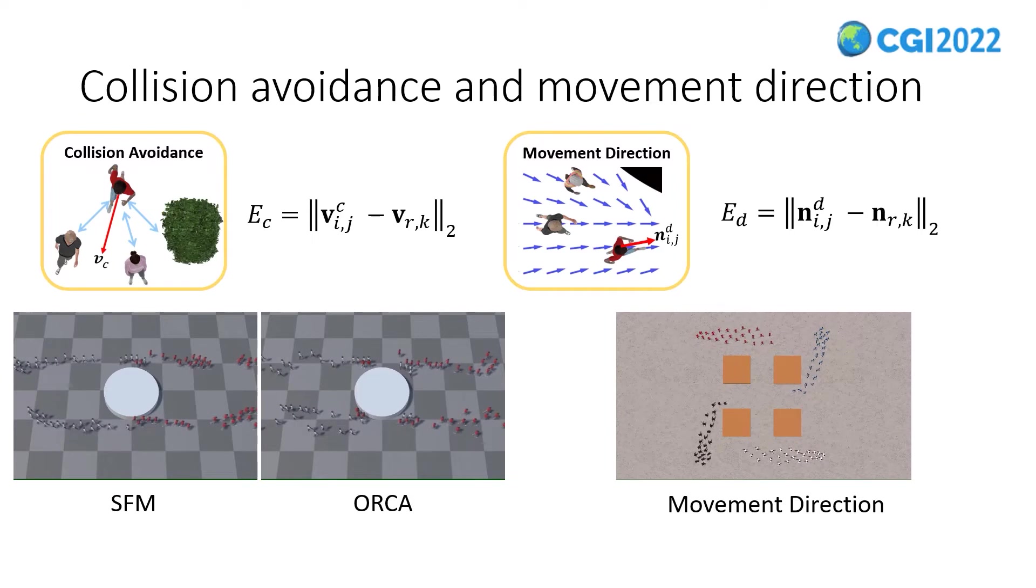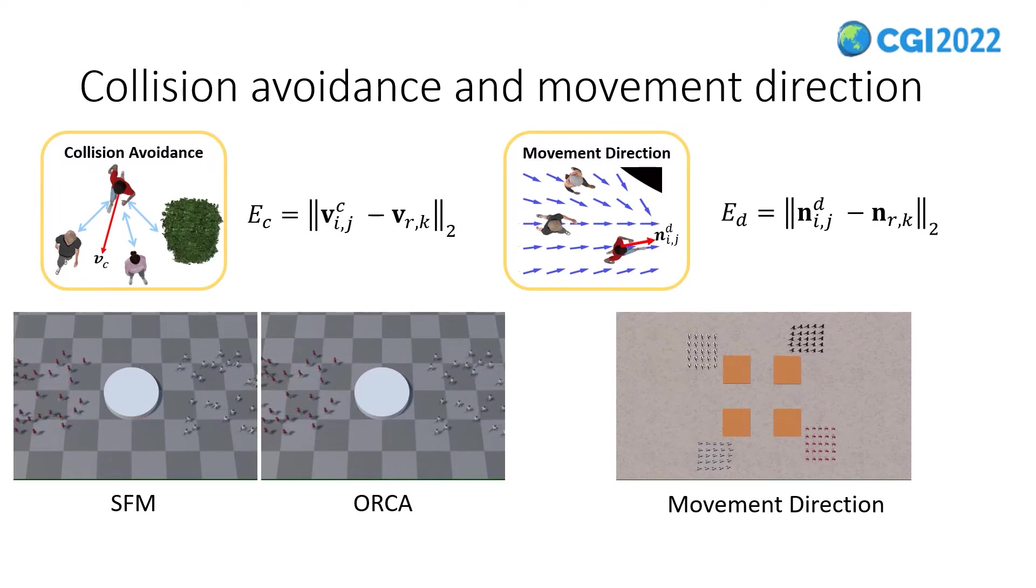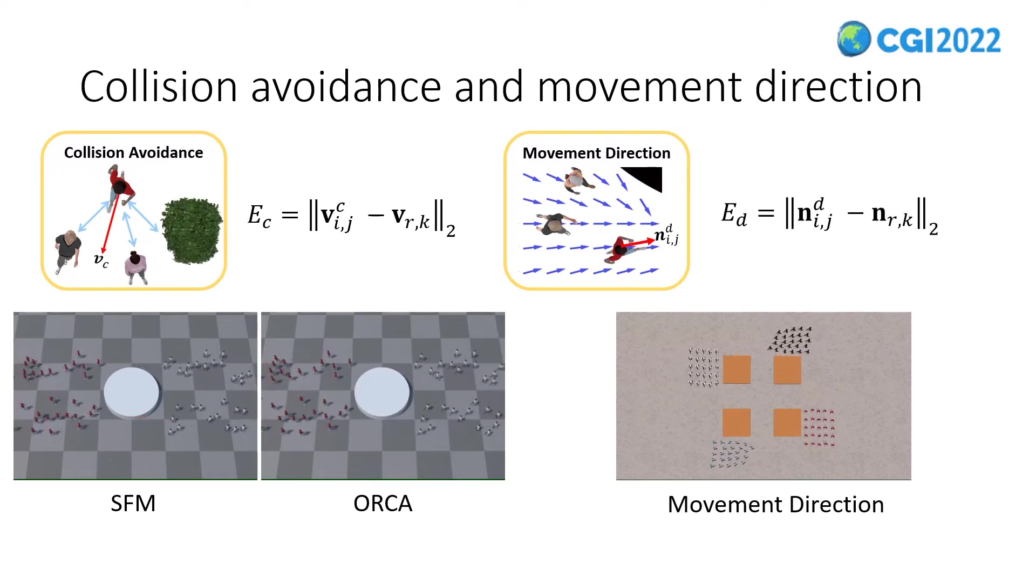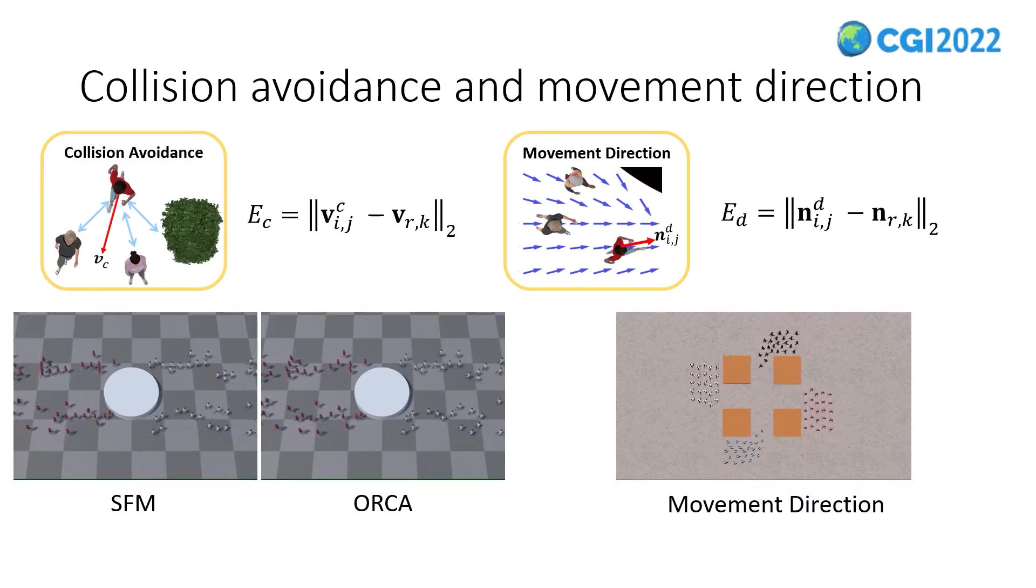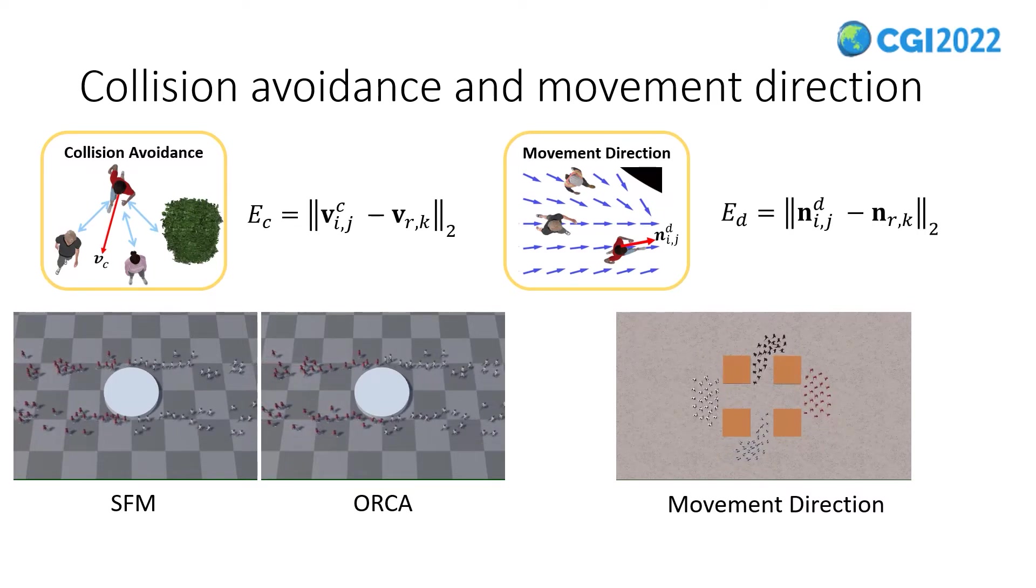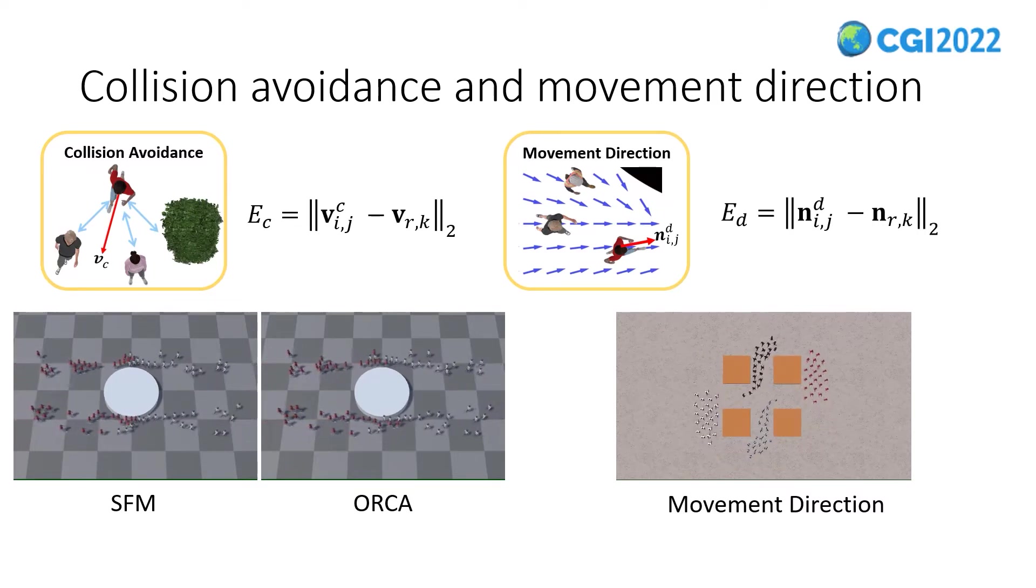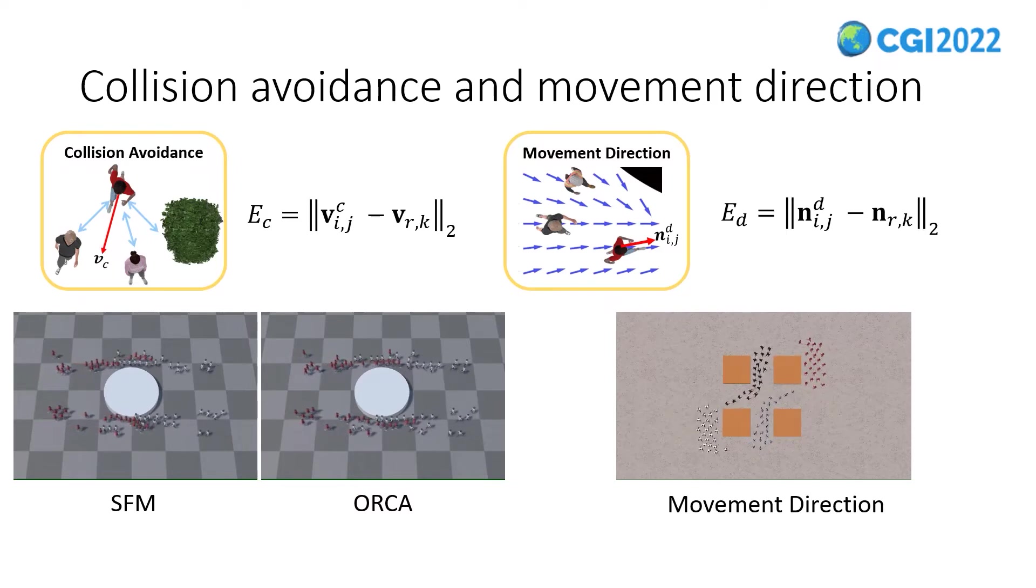Different collision avoidance mechanisms lead to different crowd movement patterns. As shown in this figure, in a scene where two groups face each other, the agents that use SFM to avoid collisions tend to gather in small piles, while the agents using ORCA are scattered to avoid collisions.